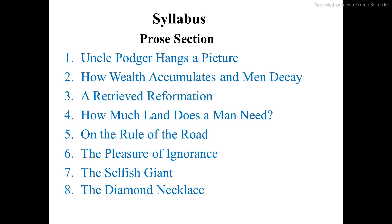The syllabus of the prose section is: Uncle Poser Hangs a Picture, How Wealth Accumulates and Men Decay, A Retrieved Reformation, How Much Land Does a Man Need, On the Rule of the Road, The Pleasure of Ignorance, The Selfish Giant, and The Diamond Necklace.